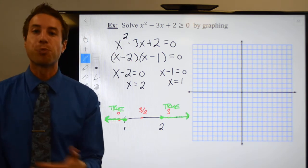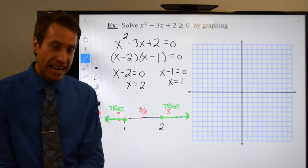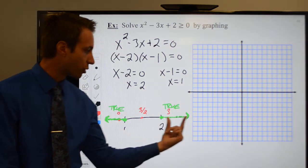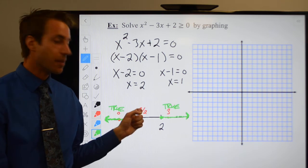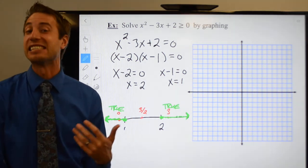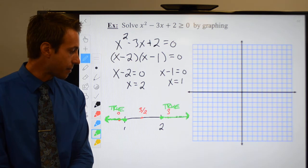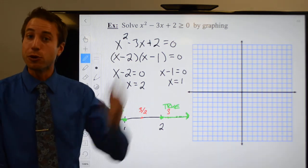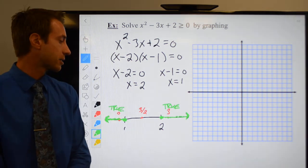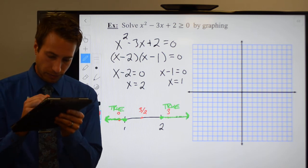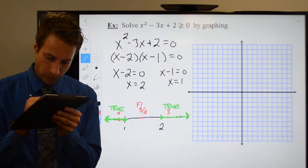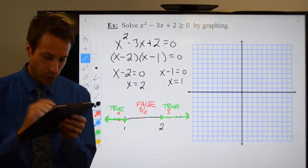At this point, you're done. You don't need to go any further since this was true and this was true. 3 halves is not going to be a true statement. You can throw it in if you want to, but it's definitely going to come out false. Feel free to test it if you would like.